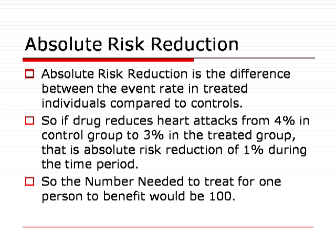Could you explain the difference between absolute risk and relative risk? Absolute risk reduction is the difference between the event rate in treated individuals compared to controls. For example, if a drug reduces heart attacks from 4% in the control group to 3% in the treated group, that is an absolute risk reduction of 1% during the time period. So the number needed to treat for one person to benefit would be 100.